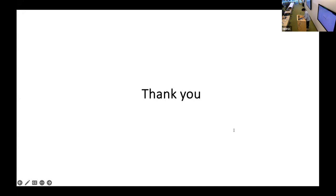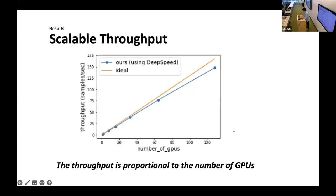Can you go back to your slide that shows the GPU scaling? So on average, how many samples are you training a model on? On average, 8,000 samples are trained per epoch, and the whole sequence is divided into sub-sequences to allow the model to accommodate the large-scale dataset.